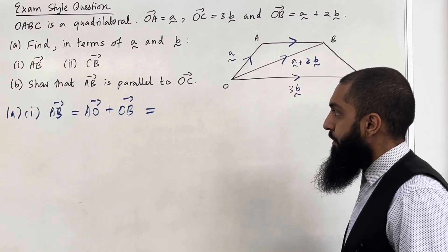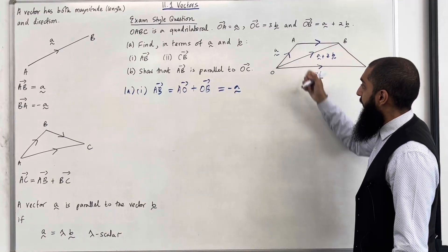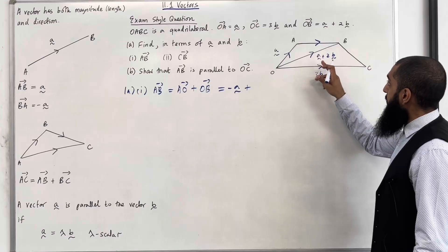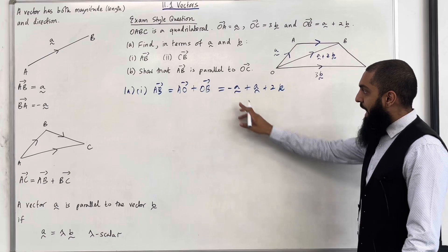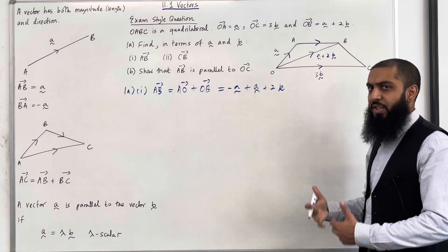This is equal to minus A. We're going in the opposite direction of that arrow. Plus the vector O to B, which is A plus 2B. Okay, so minus A plus A is just 0, it's a 0 vector plus 2B, which is just the vector 2B.